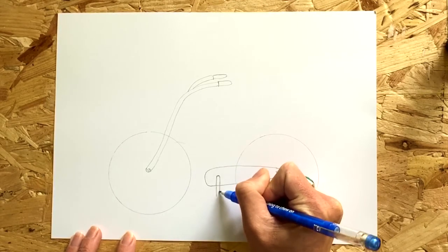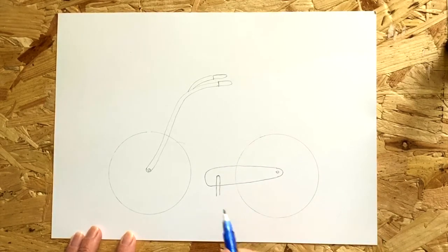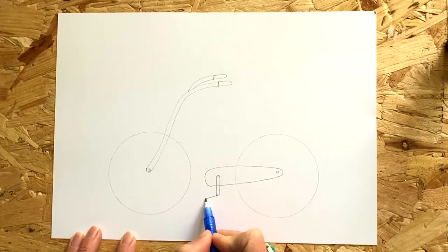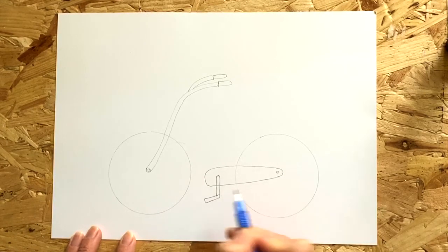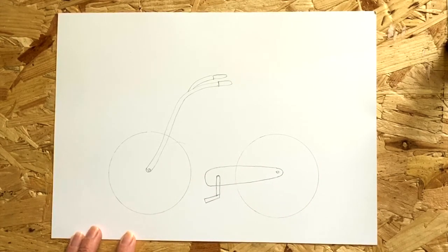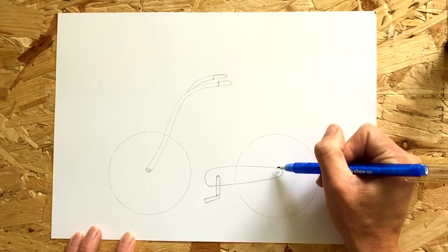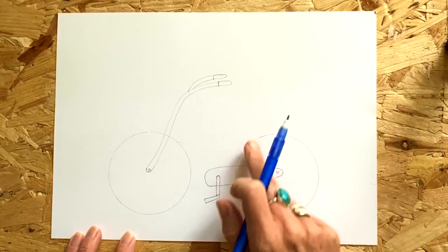Next, draw an upside down C and then two lines coming downwards from that C and then you're going to draw a rectangle at an angle from the bottom of there and there you have a little pedal.